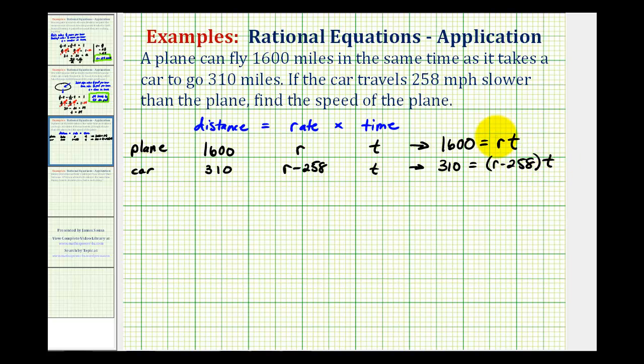Notice how we have two equations with two unknowns. But remember we do know that these two t's are equal to each other. So now we're going to take these two equations and solve them for t. So if we have 1,600 equals r times t, we divide both sides by r. We know that t is equal to 1,600 divided by r.